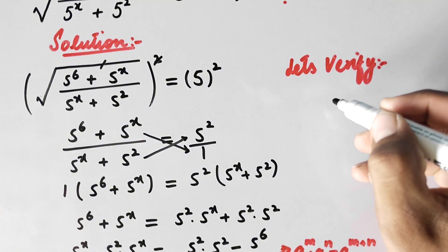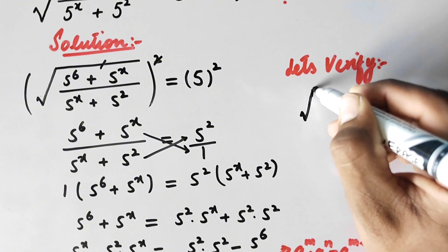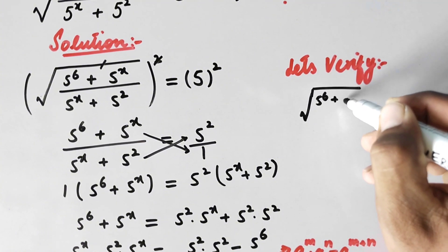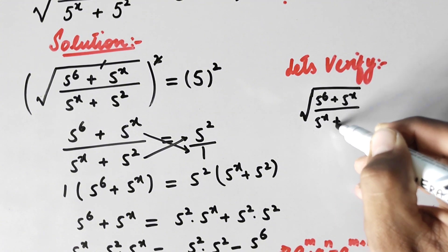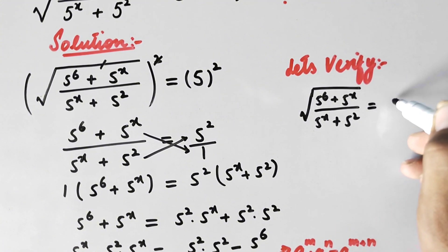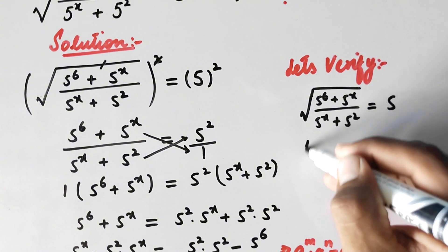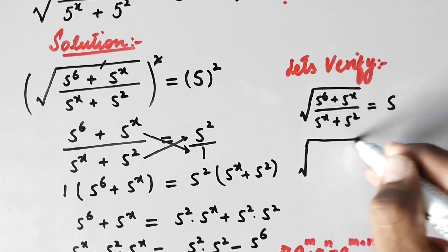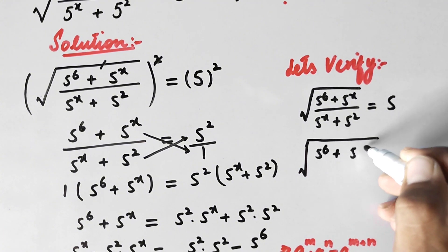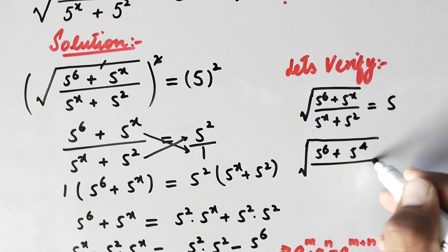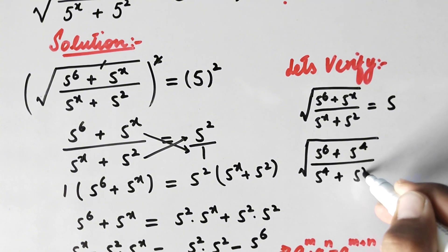We write our original equation: square root of (5 to power 6 plus 5 to power x) divided by (5 to power x plus 5 square) equal to 5, and by putting the value x equal to 4 we get square root of (5 to power 6 plus 5 to power 4) divided by (5 to power 4 plus 5 square) equal to 5.